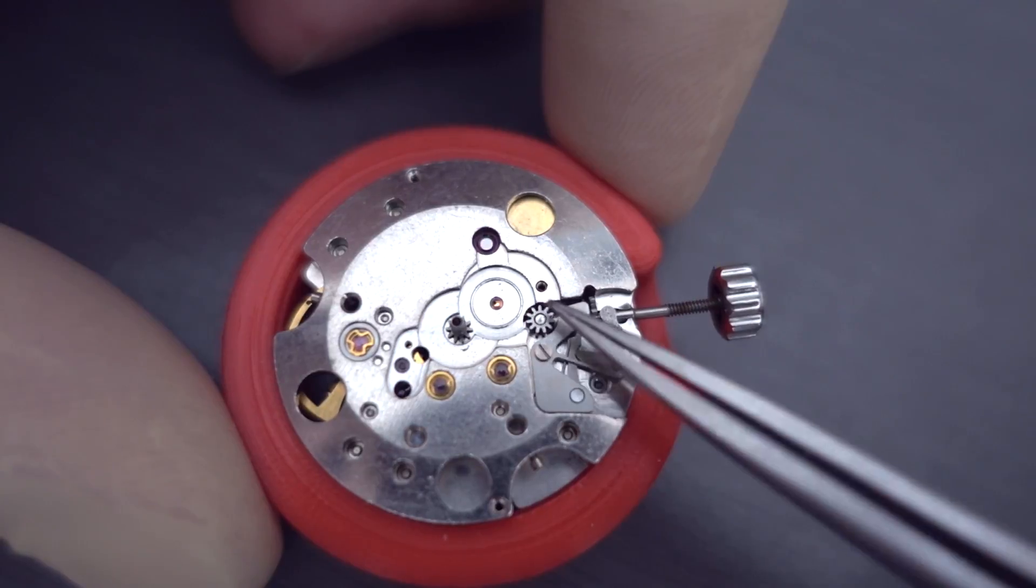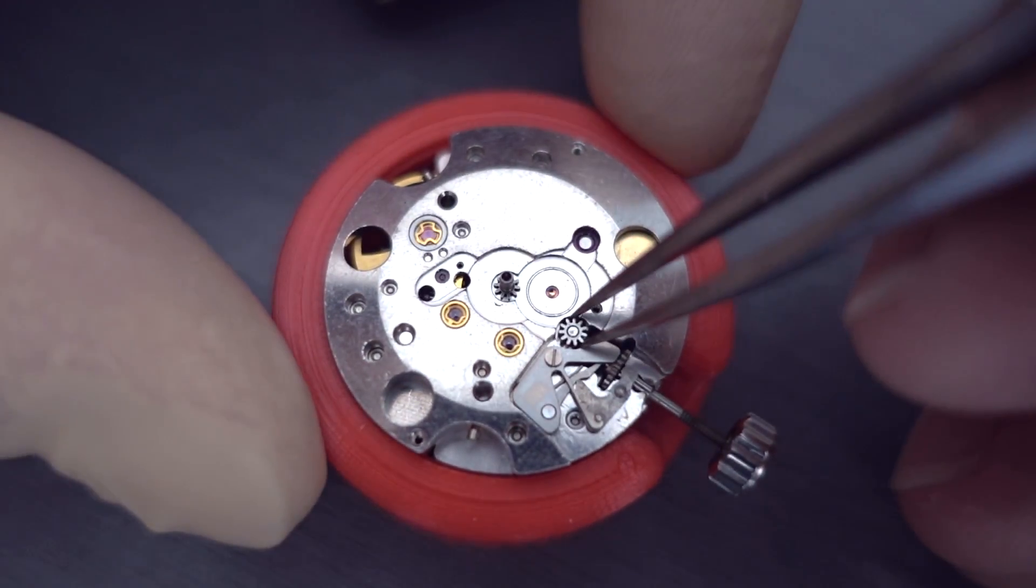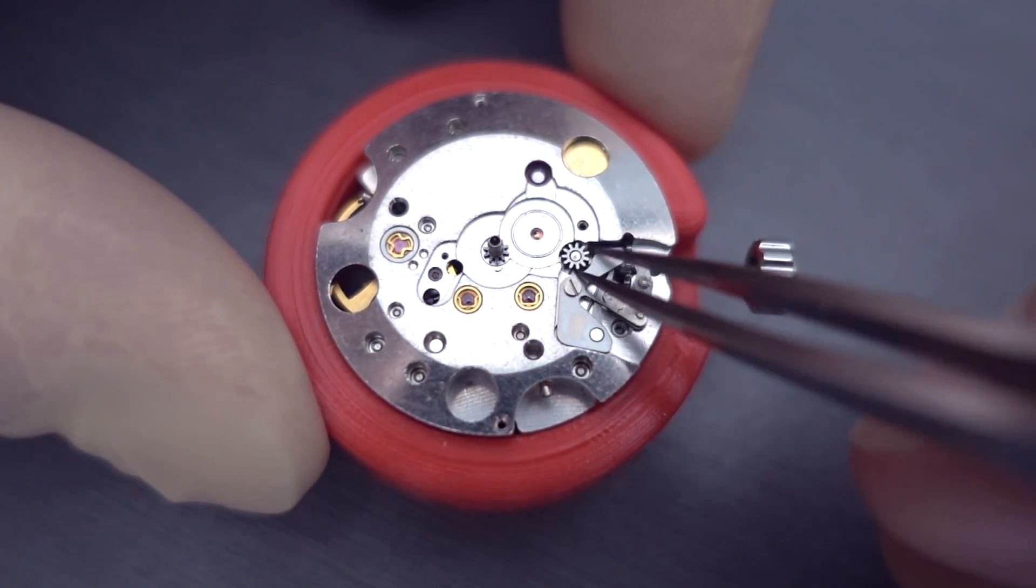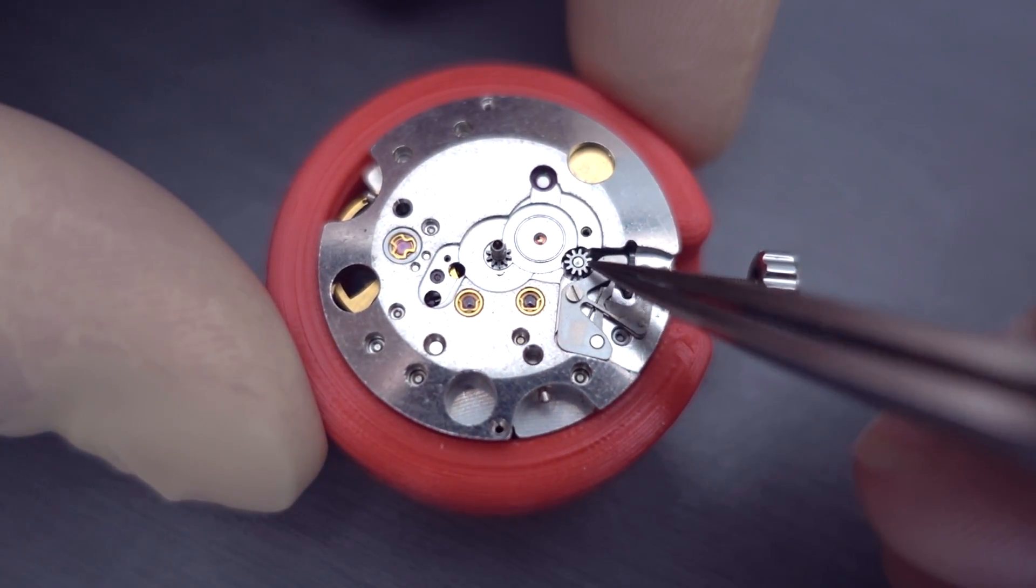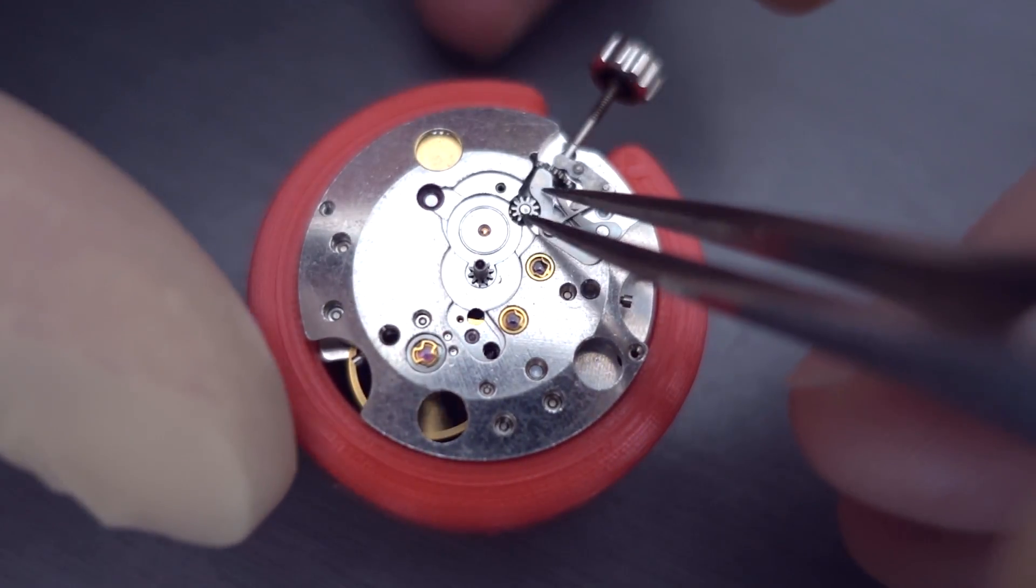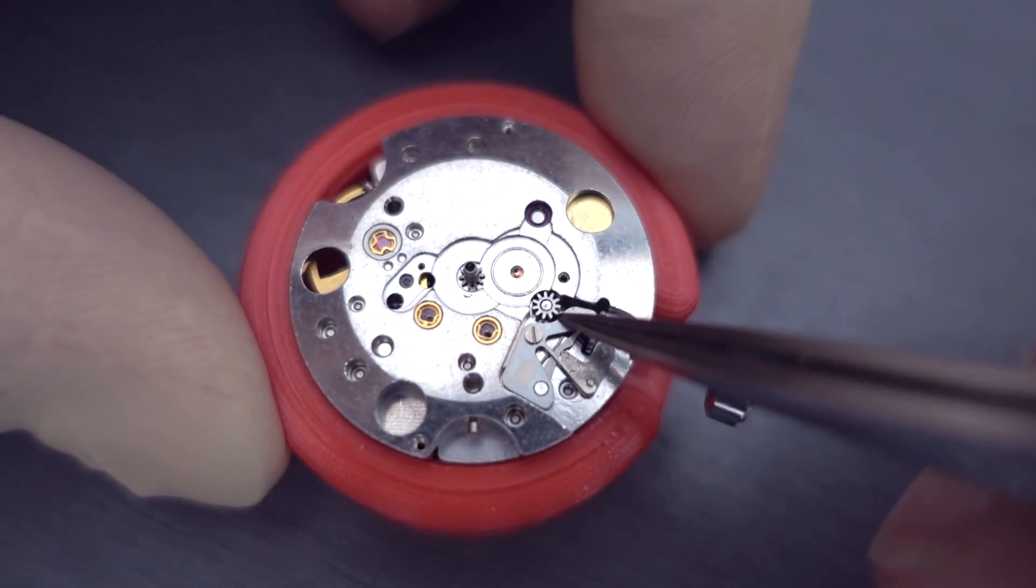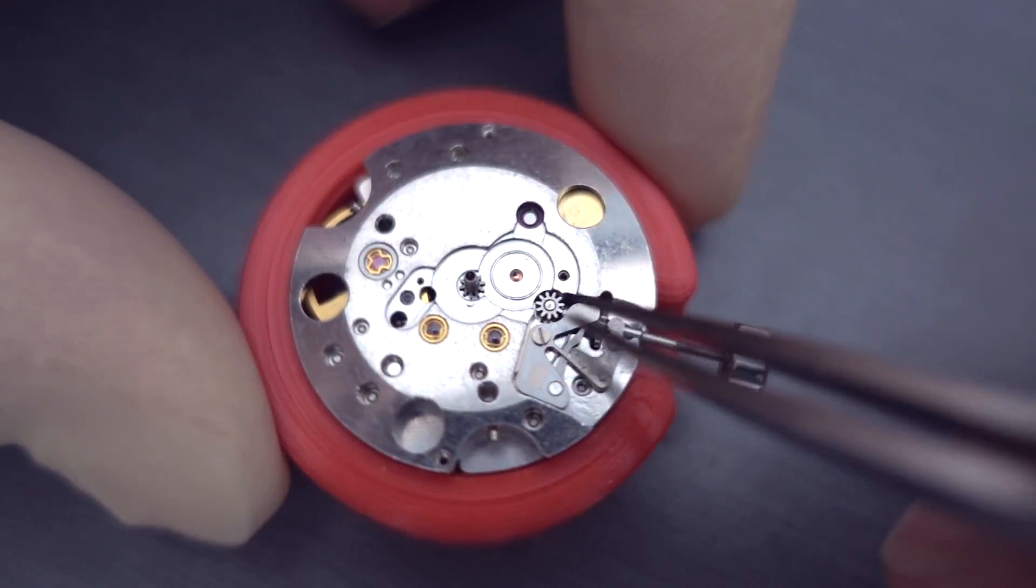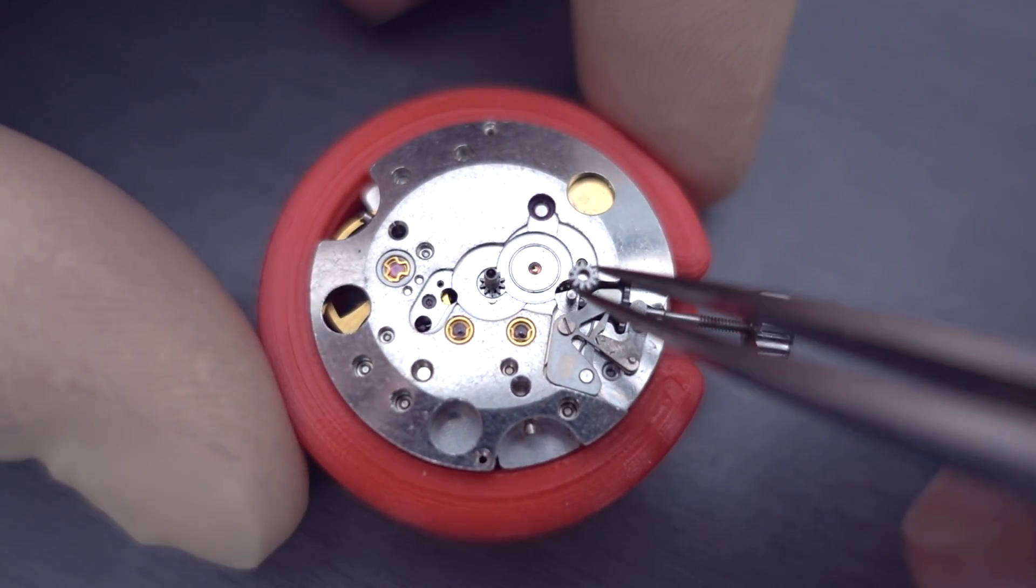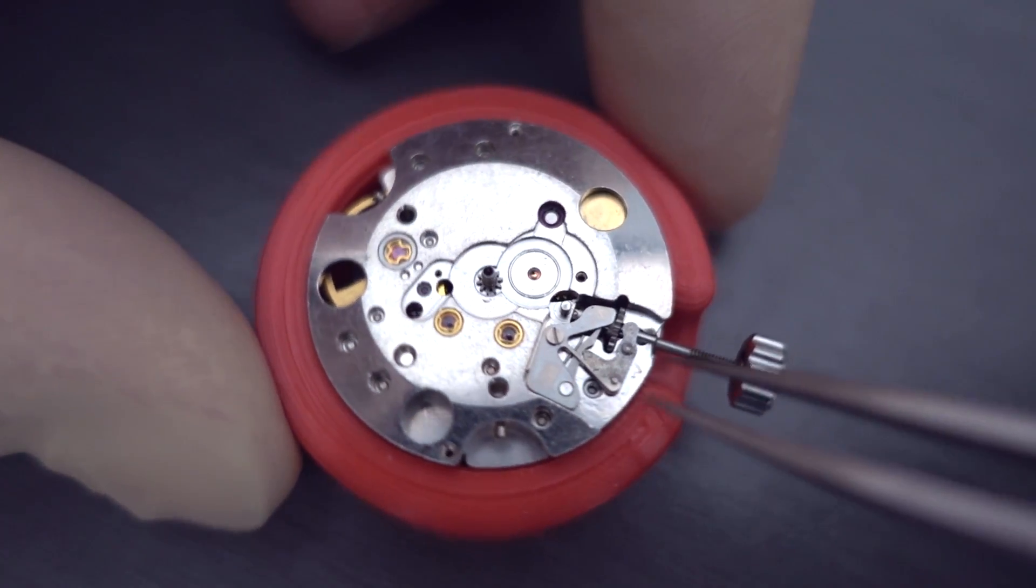Now just removing that there you'll see that that wheel is a bit unusual in that it actually has the post built into the wheel and it's just a dual hole in the plate. And just removing the little intermediate wheel there. And that was really sticky. As you can see I took a little bit to get off just because it had some dry oil and stuff in it.